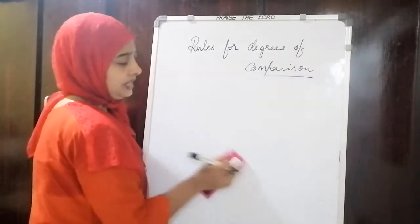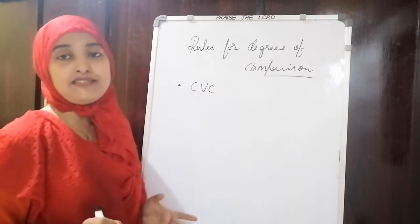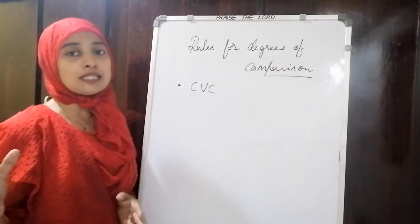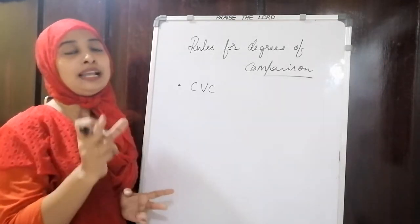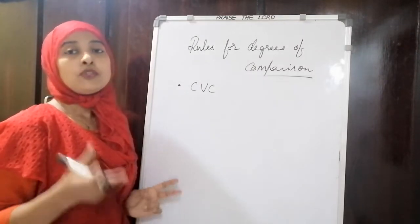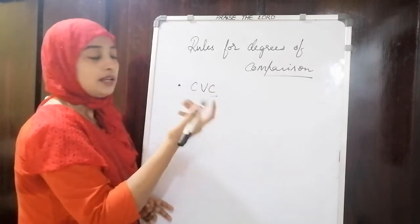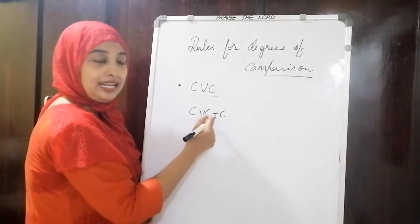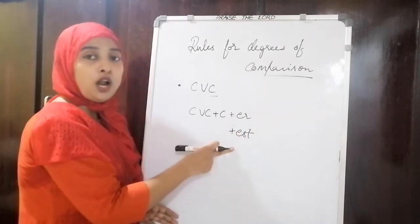The next rule: if the word is ending with a CVC pattern — consonant, vowel, consonant — or the word itself is a CVC, that is a small three-letter word, then you won't simply add ER or EST. Instead, the final consonant must be doubled first.